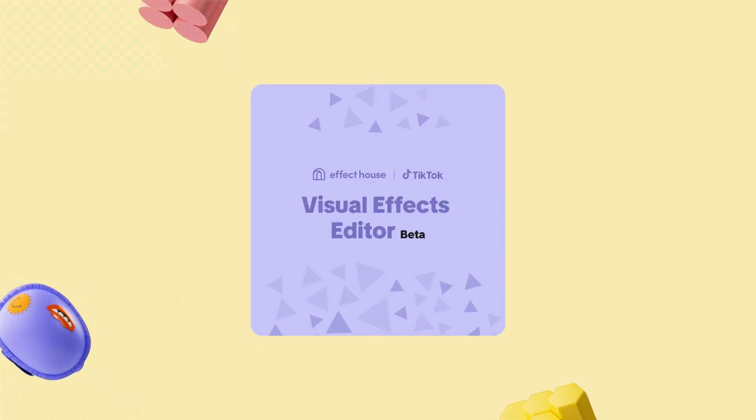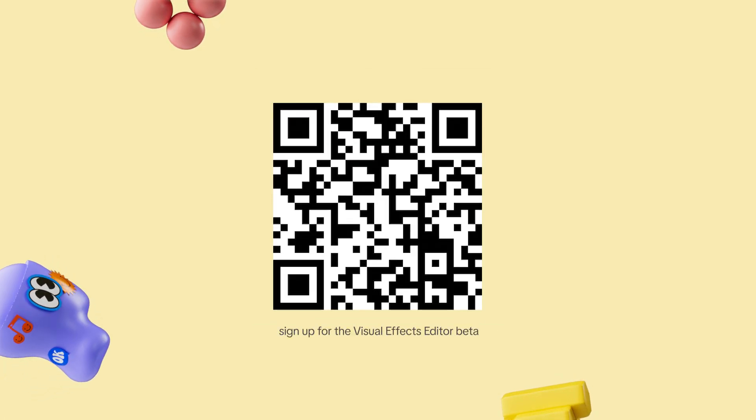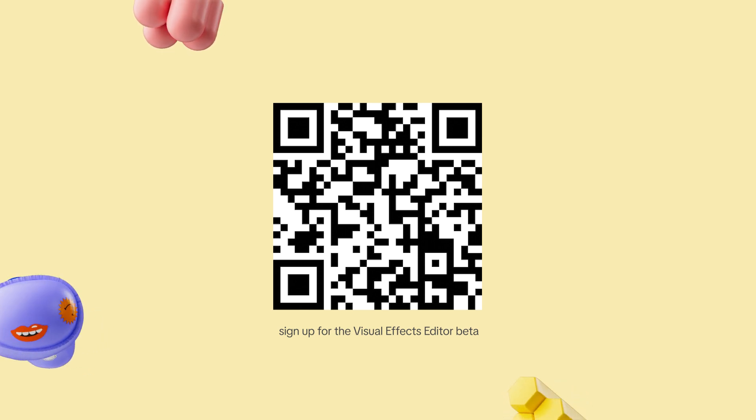Effect House is pushing the boundaries of real-time graphics, and tools like VFX Editor are a testament to that. Visual effects, once only accessible to Hollywood blockbusters, can now be achieved right here in Effect House. VFX Editor operates much like the Material Editor, allowing you to create effects by combining nodes. If you're already comfortable with Material Editor, you'll find many similarities. We're happy to announce that we'll be launching a beta for VFX Editor early next year. Keep an eye out for an email after the conference with a link to sign up for the beta program.